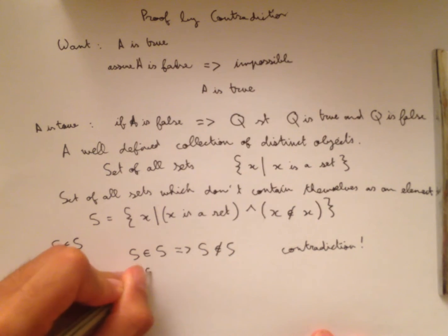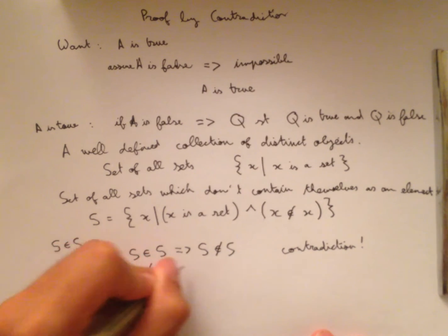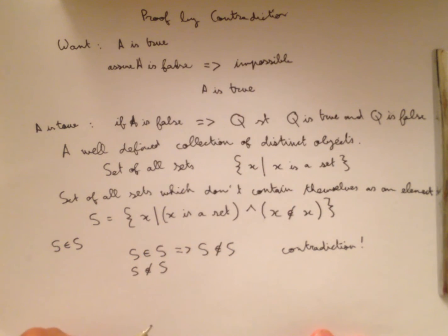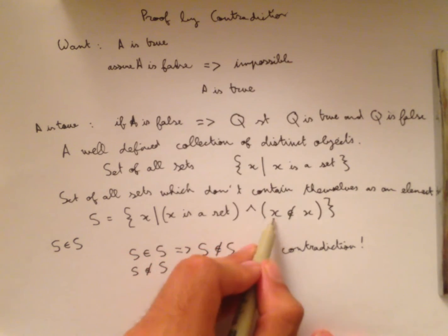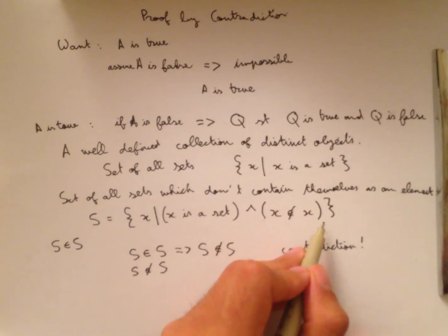So now let's assume S is not an element of S. Well, if S is not an element of S, S is a set. S is not an element of S, so it's not an element of itself, in other words.